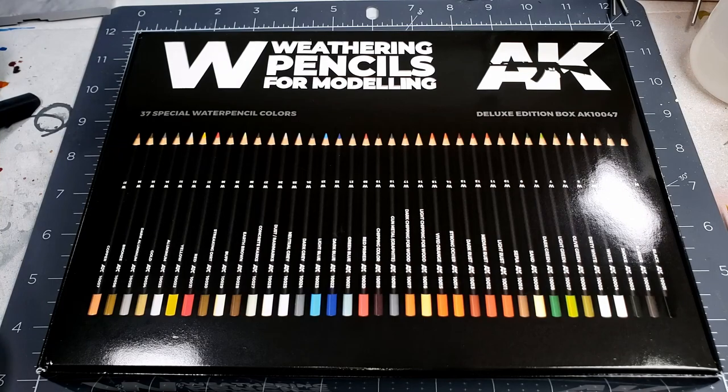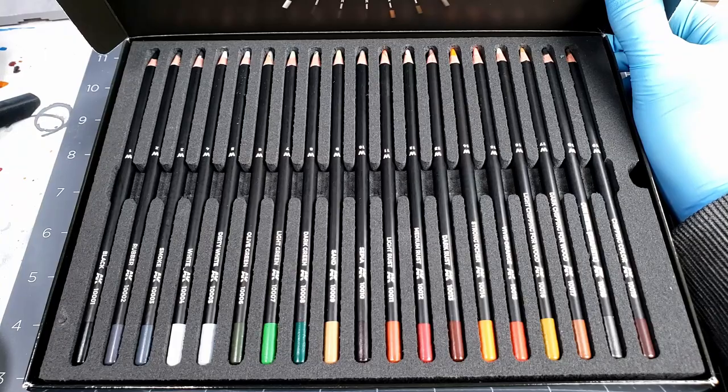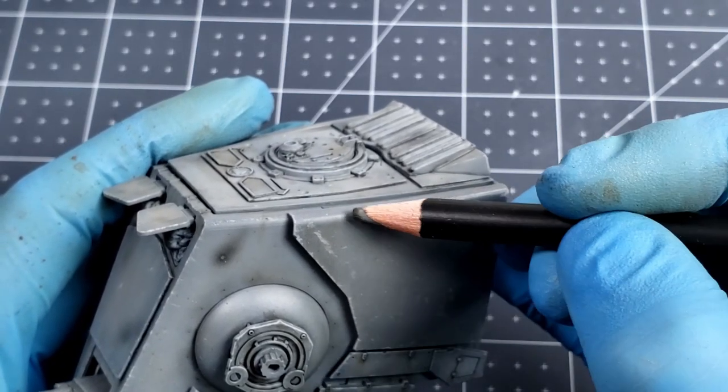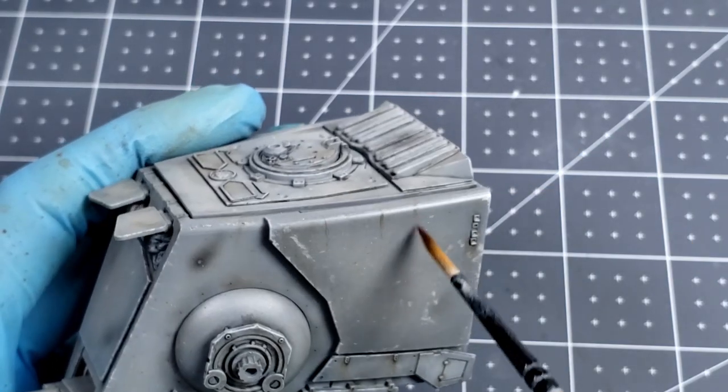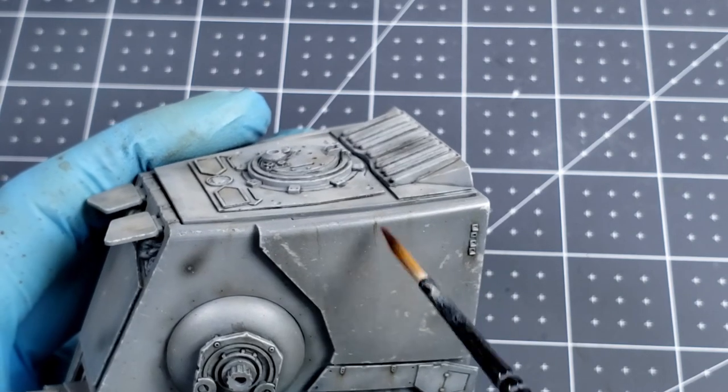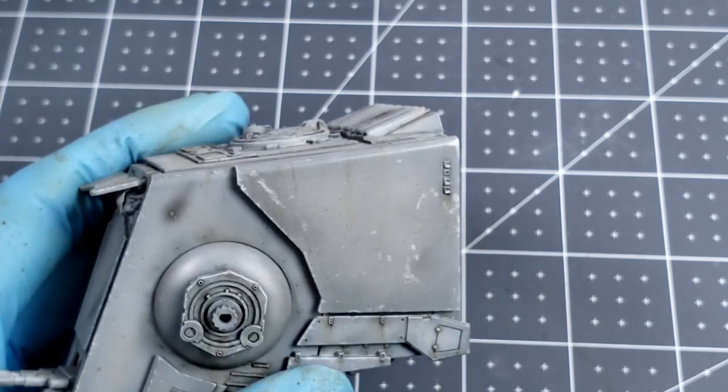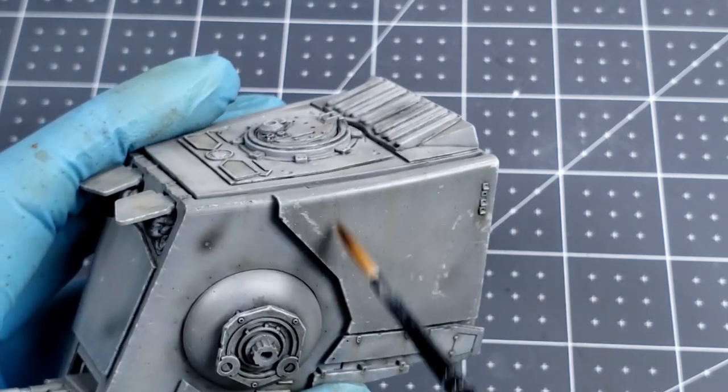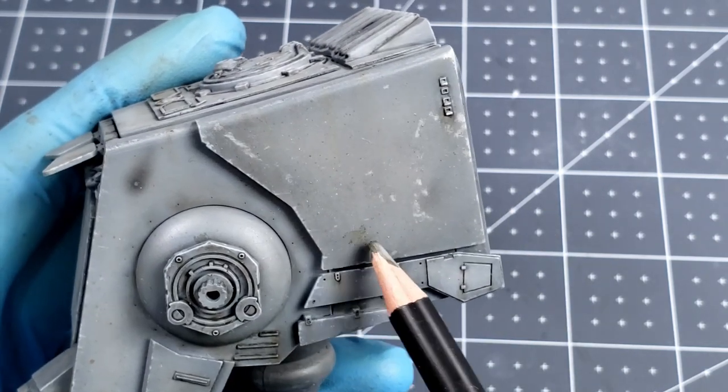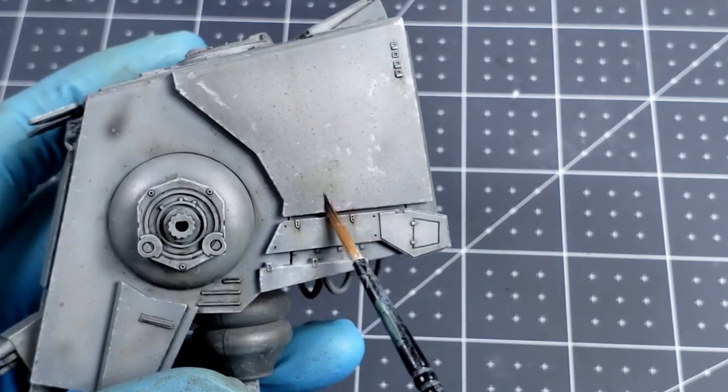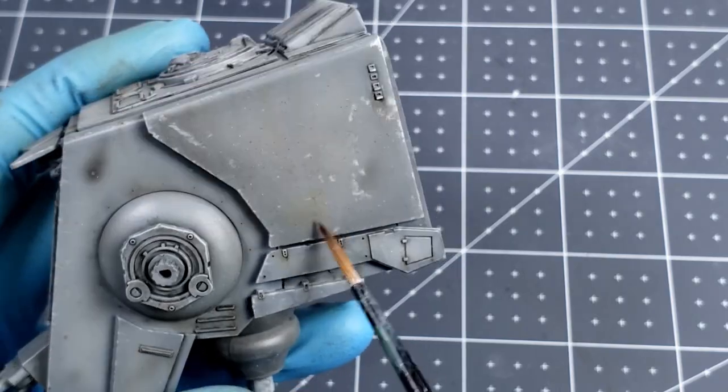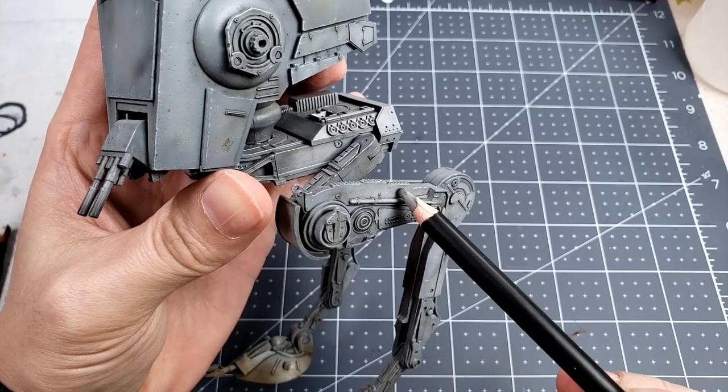Lastly I had received these weathering pencils as a Christmas gift right as I finished the dirt effects. I really wanted to give them a try so I grabbed the olive green and looked to add some color variation just to experiment. I was really impressed with how well these blended and liked how they added a nice subtle green tone. So I found some other spots on the model that I just decided to apply this and give it an extra little bit of variation.